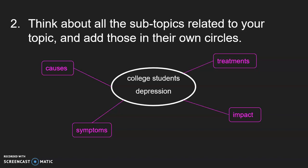Step two: think about the subtopics that might be related to your topic, and then add those to the brainstorming map using their own little circles. In this case, what I came up with was the causes of depression, the symptoms of depression, the treatments for depression, and then the impact. What do I mean by impact exactly? Let's move on to step three.